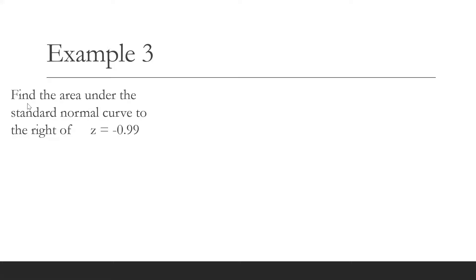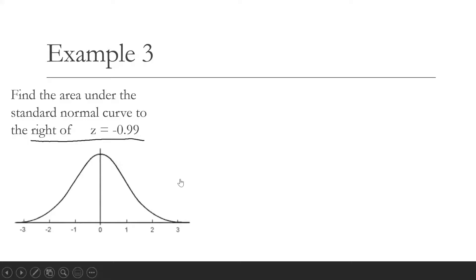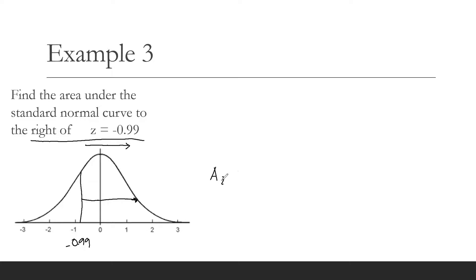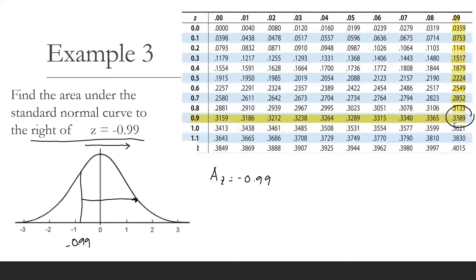Let's have example number three: find the area under the standard normal curve to the right of z equals negative 0.99. Draw the normal curve and then locate negative 0.99 on it — that is between negative 1 and 0. We are asked to find the area to the right of negative 0.99. We find the area that corresponds to negative 0.99 in the normal distribution table, which is equal to 0.3389. That is the area from 0 going to negative 0.99.